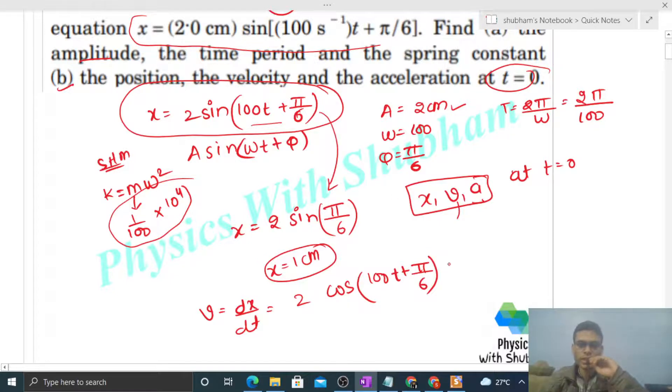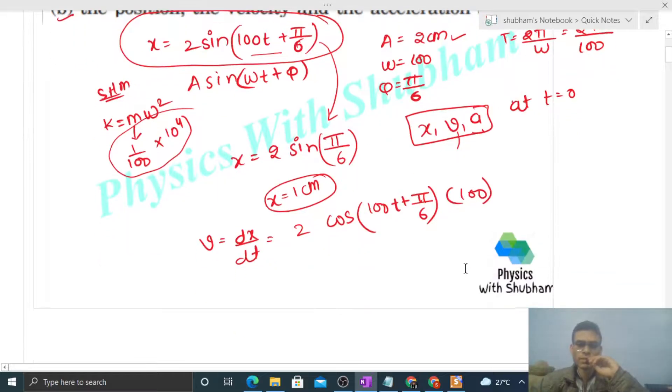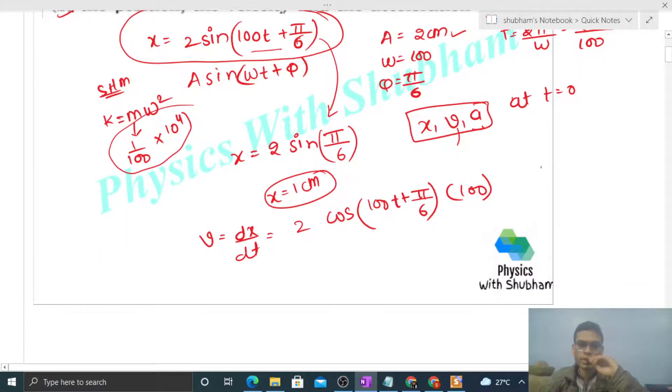So this is the function of velocity: v = 200 cos(100t + π/6). Now at time t = 0, we have to find velocity, so put time value as 0. This will be cos(π/6).